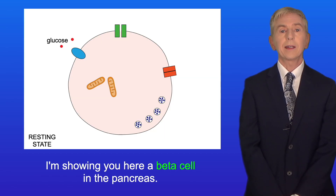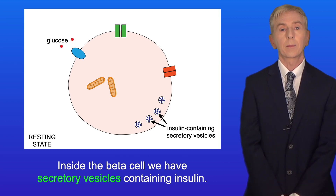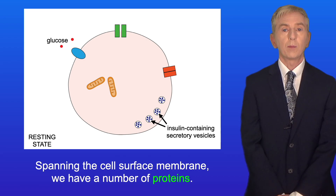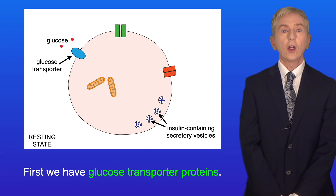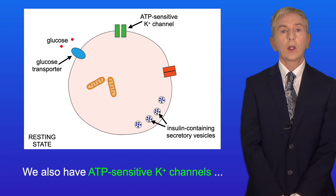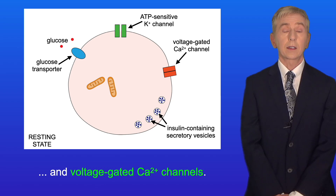Here is a beta cell in the pancreas. Inside the beta cell we have secretory vesicles containing insulin. Spanning the cell surface membrane we have a number of proteins: glucose transporter proteins, ATP-sensitive potassium ion channels, and voltage-gated calcium ion channels.